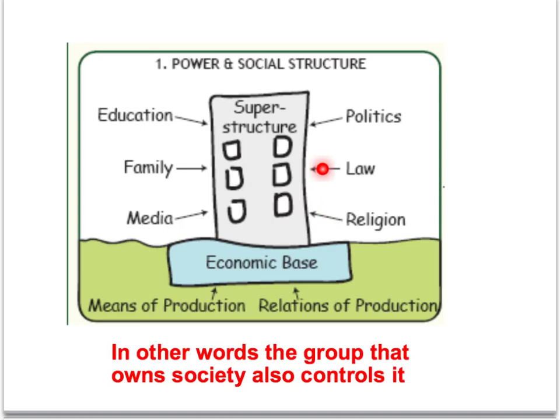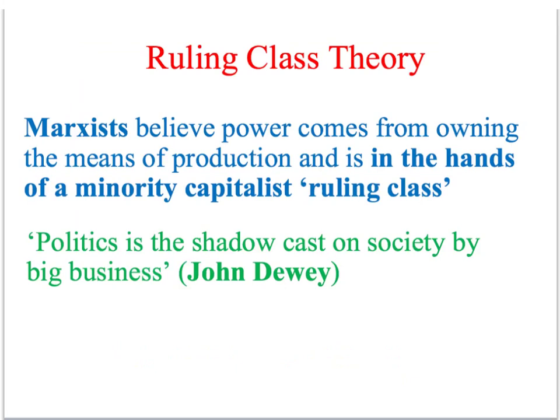The economic base shapes and influences all of the other institutions that we find within society, including the political institutions. This means from a Marxist perspective that ultimately political power is derived from economic power. In other words, the group that owns society is also the group that controls it politically. Marxists argue that within a capitalist economic structure, power comes from ownership and control of the means of production, and is therefore in the hands of a minority capitalist ruling class.